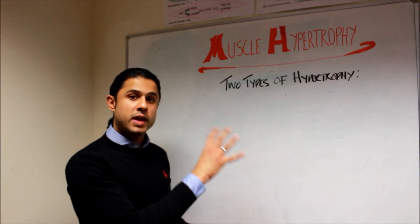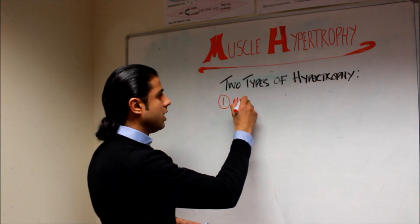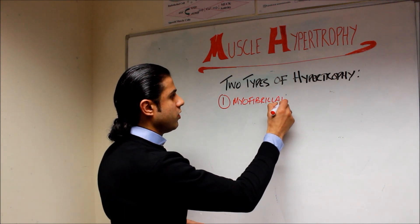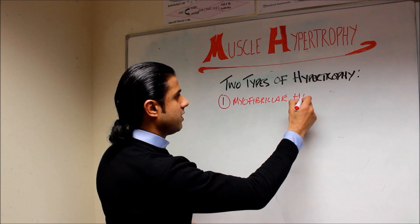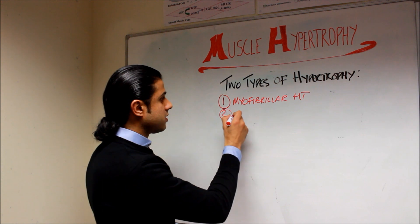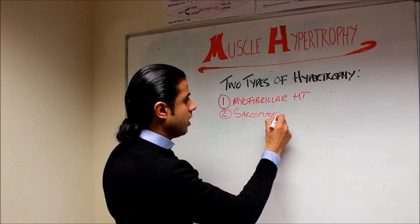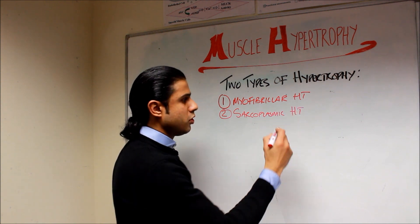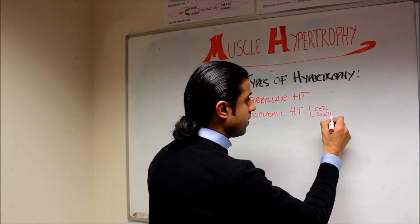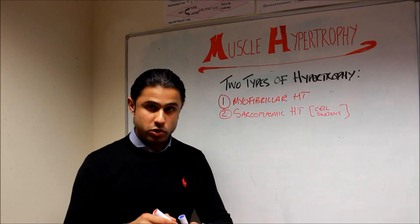There are two main types of hypertrophy. The first is known as myofibrillar hypertrophy, and the second is known as sarcoplasmic hypertrophy. Sarcoplasmic hypertrophy is also known as cell swelling — this is what you feel when you go to the gym and have the muscle pump, that pumped feeling we get when we're actually doing the session.